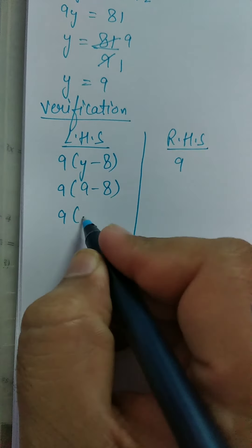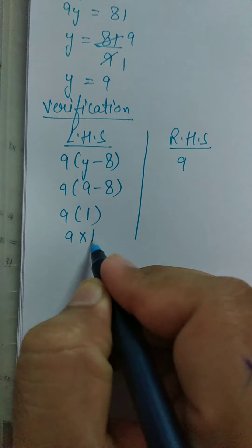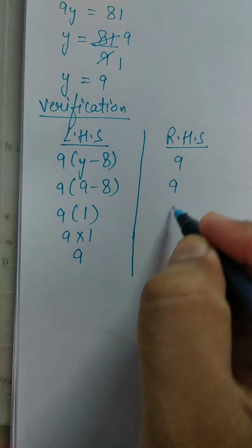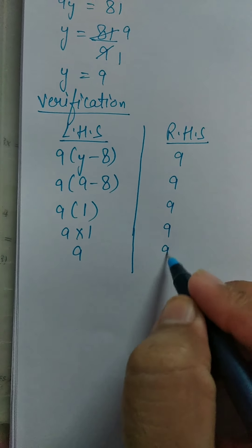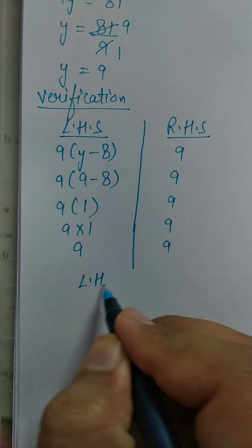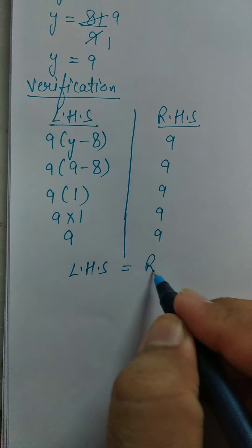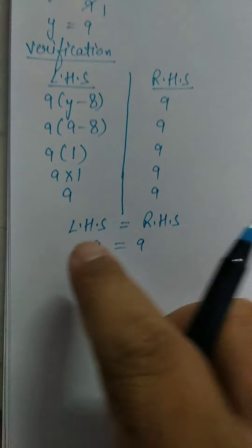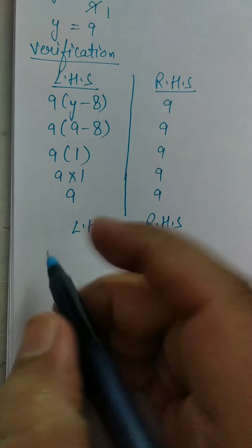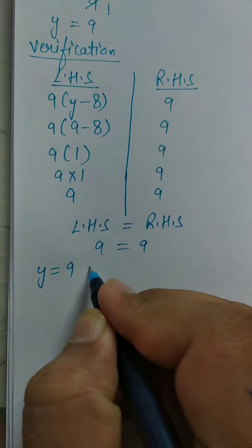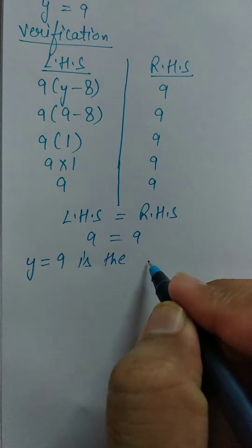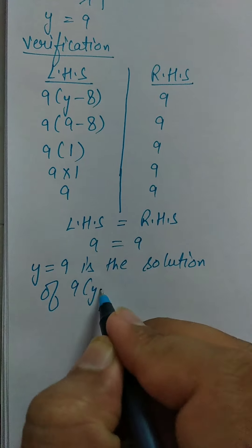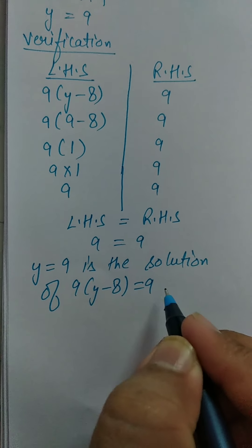9 minus 8 is 1. So, 9 multiplied by 1 is 9. In RHS, you have 9. So here, LHS is equal to RHS — 9 is equal to 9. So your solution is correct. Y is equal to 9 is the solution of 9(Y minus 8) equal to 9. I hope it is clear to all of you.